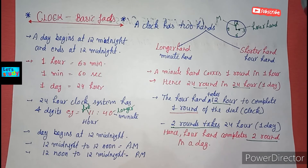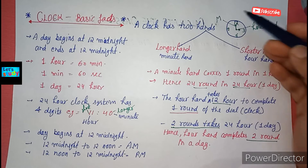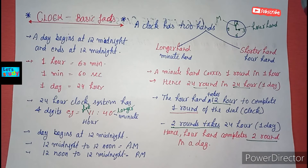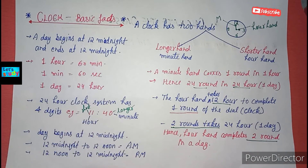A day begins at 12 midnight and ends at 12 midnight too. The day begins at 12 midnight and completes at 12 midnight. A day has 24 hours. One hour has 60 minutes, one minute has 60 seconds, and one day is equal to 24 hours.